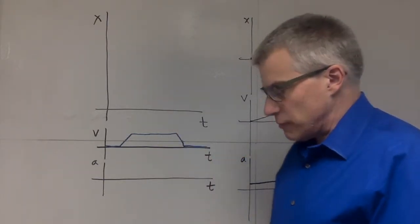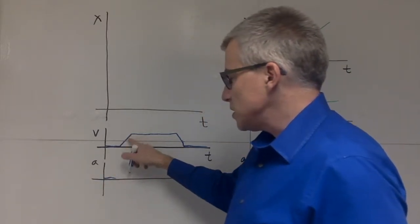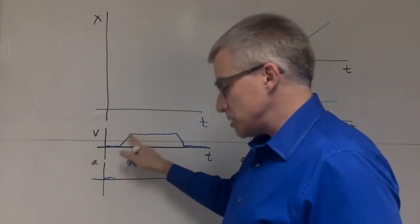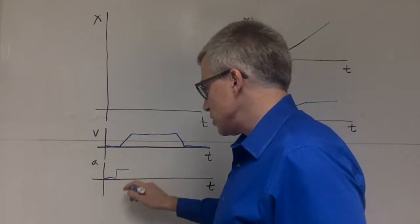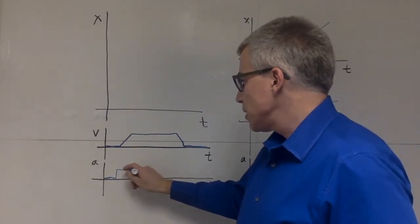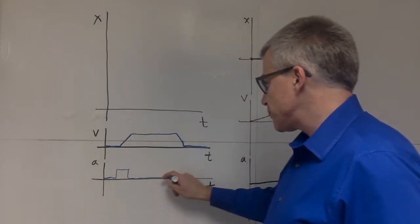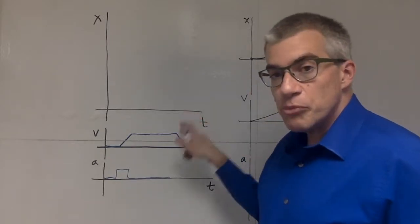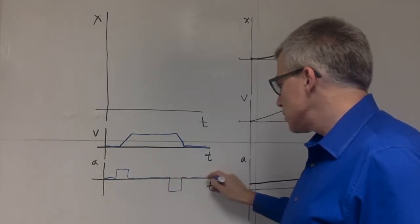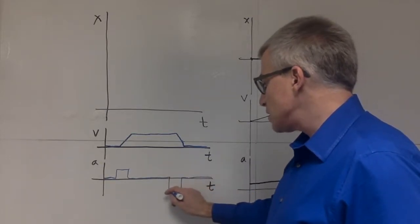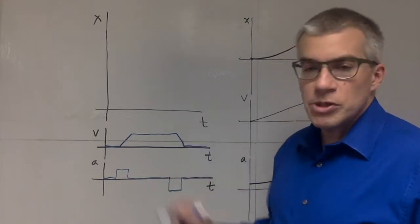What's the acceleration graph look like for that? You've got no acceleration. And then when this is slope, straight slope, this is constant. So the acceleration climbs up to a specific amount. That's the amount he's hitting the gas. And then goes back to zero when we're hitting cruising speed. And then when he hits the brakes, he's going to have a negative constant acceleration during the slowdown. And then go back to zero acceleration when the bus is stopped.